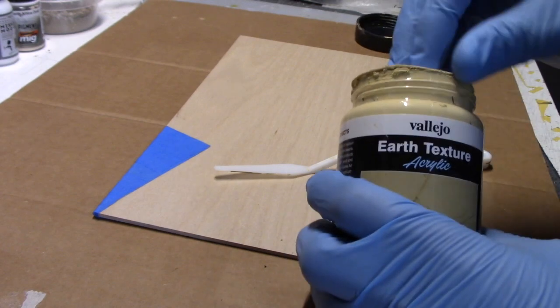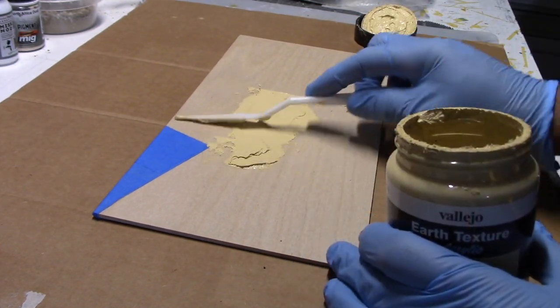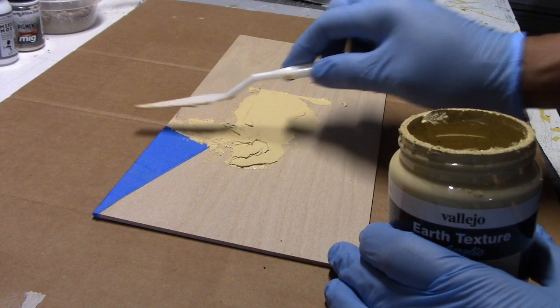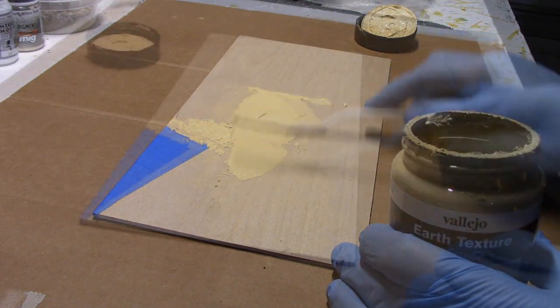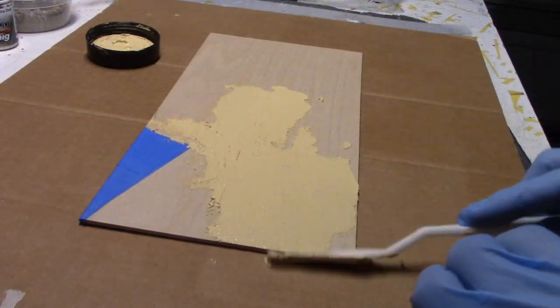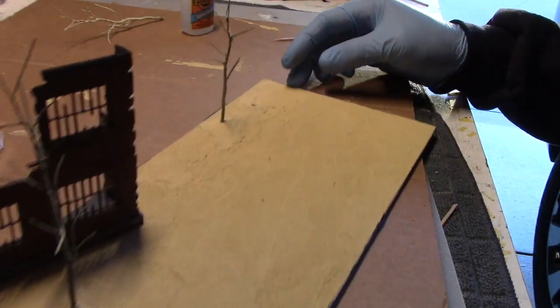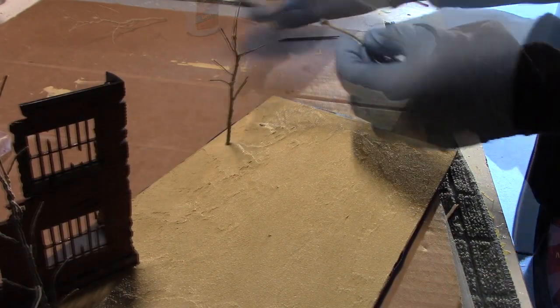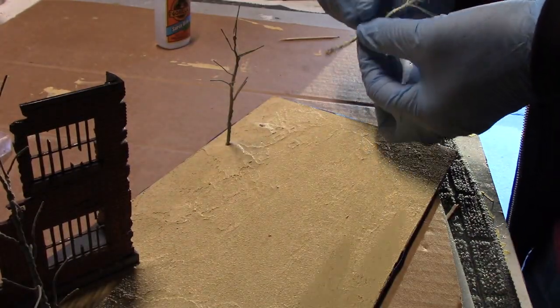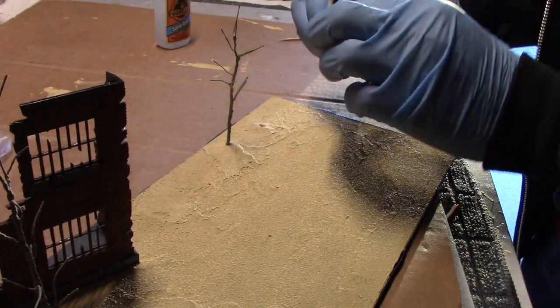So the first step here is to spread the earth texture which is easily done using a small spatula. And at the upper corner there I left a piece of masking tape in place to mark off where the building will be attached and to keep it free from any of the texture. Next was to attach the trees. First I drilled a small hole to accommodate the trunk and now I just use super glue to attach it permanently to the base.